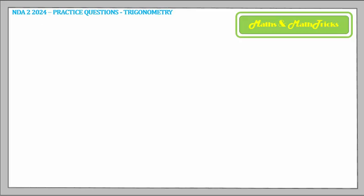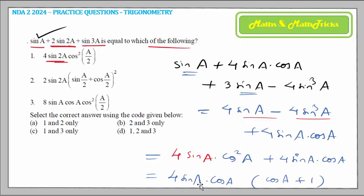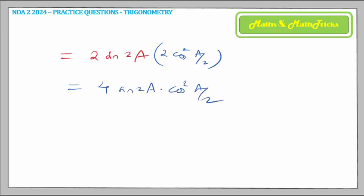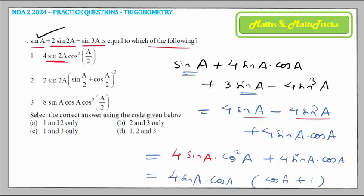The expression becomes 4 sin a cos²a + 4 sin a cos a. Taking 4 sin a cos a common, we get cos a + 1 in the bracket. This can be written as 2 sin 2a (since 4 sin a cos a = 2 sin 2a) times (1 + cos a), and using the half-angle formula 1 + cos a = 2 cos²(a/2), we get 4 sin 2a × cos²(a/2). This matches statement 1, so statement 1 is correct.